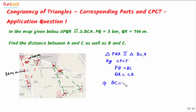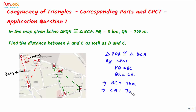This implies BC, that is the distance between points B and C, equals PQ, and PQ is given to be 3 kilometers, so BC is 3 kilometers. Also, CA is equal to QR, and QR is 700 meters, so the distance between points A and C is 700 meters.